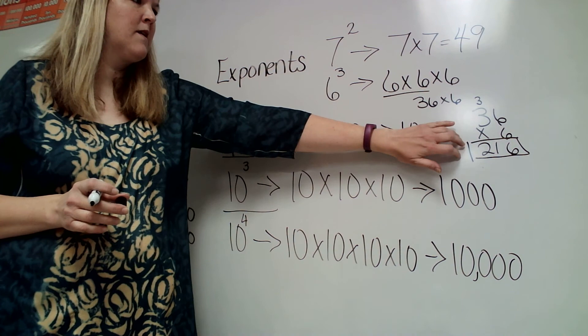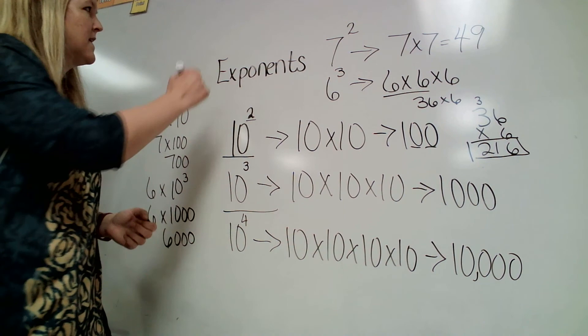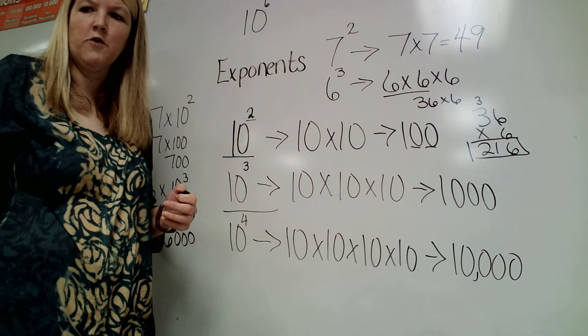So you can see that that ended up being quite a bit bigger whenever we had the exponent. Using exponents can make it easier. If I had 10 to the 6th power, that's going to be a million. So it would be easier just to write 10 to the 6th than to write out all the zeros. So that helps whenever we're getting the bigger numbers.